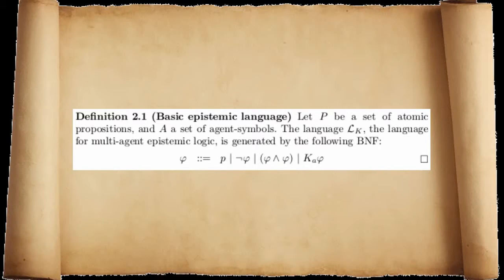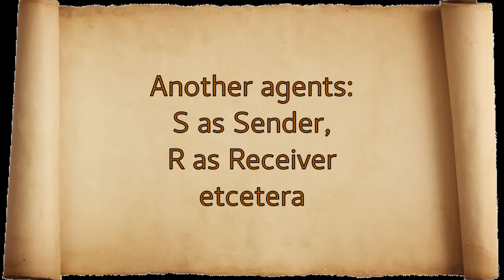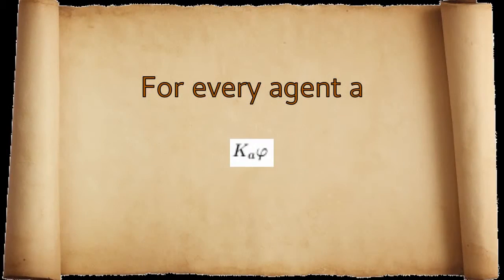Definition 2.1: Basic epistemic language. Let P be a set of atomic propositions and A a set of agent symbols. The language LK, the language for multi-agent epistemic logic, is generated by the following BNF. This notation says that atoms are formulas, and one can build complex formulas from formulas using negation, conjunction, and knowledge operators. We will also use other symbols for the agents, like S for sender, R for receiver, etc. For every agent A, the expression K sub-A phi is read as: agent A knows that phi.